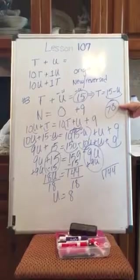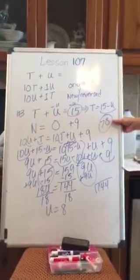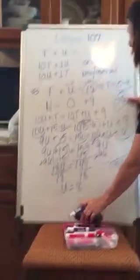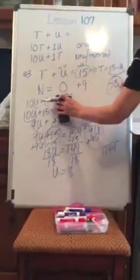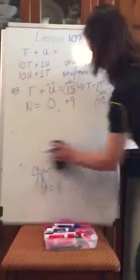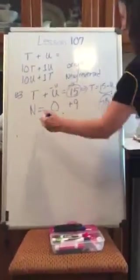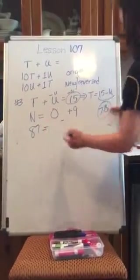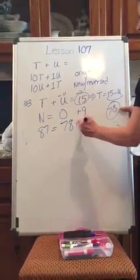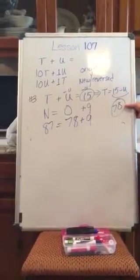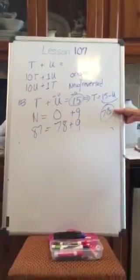All right, so now let's think about it. The new number, let me erase all of this here. The new number is when I reverse them, 87. The original number is 78. Do I have to add 9 to get to 87? Yes, it works.